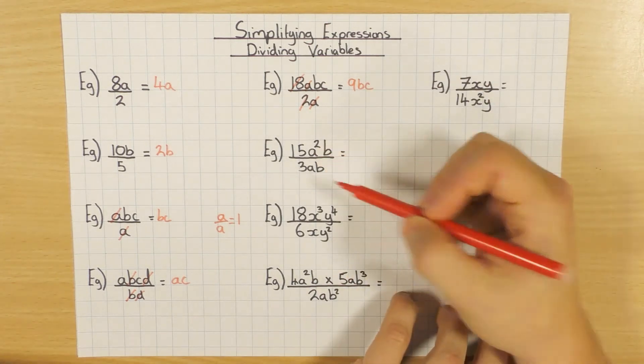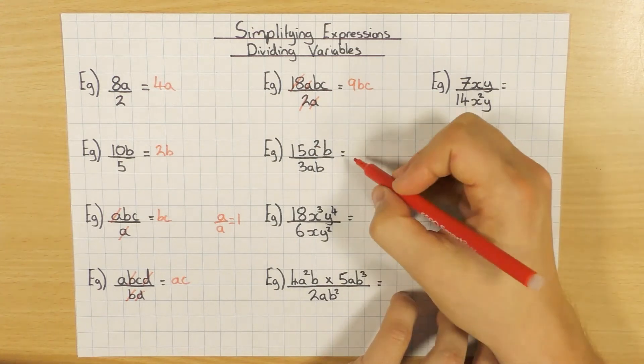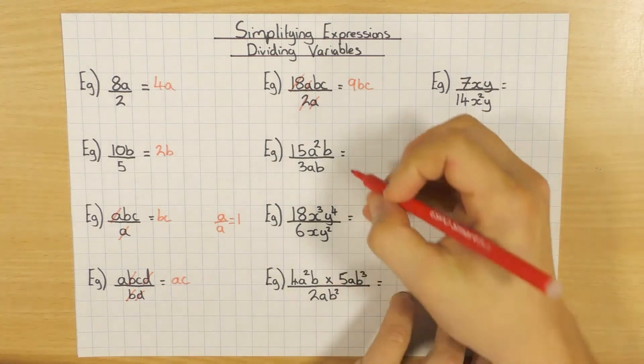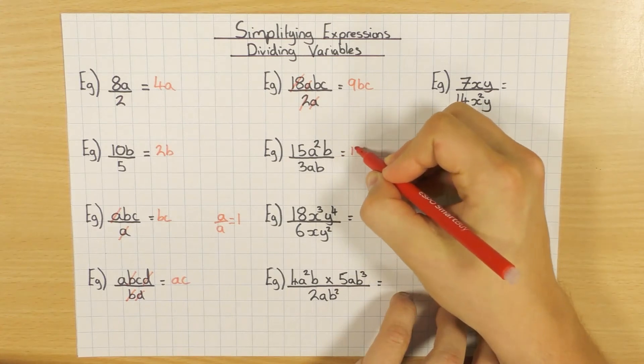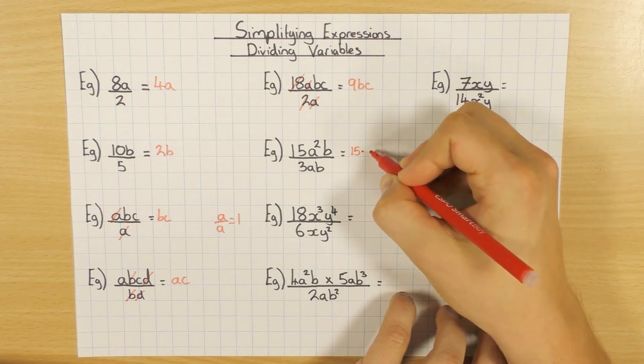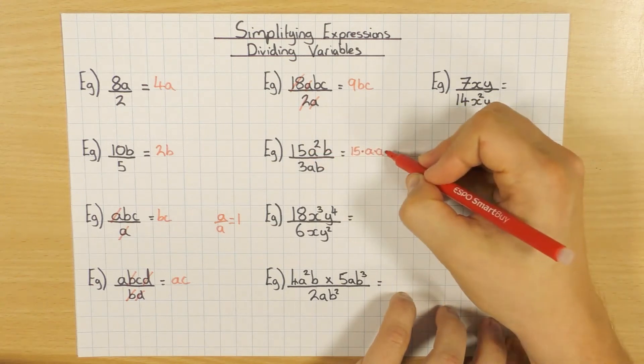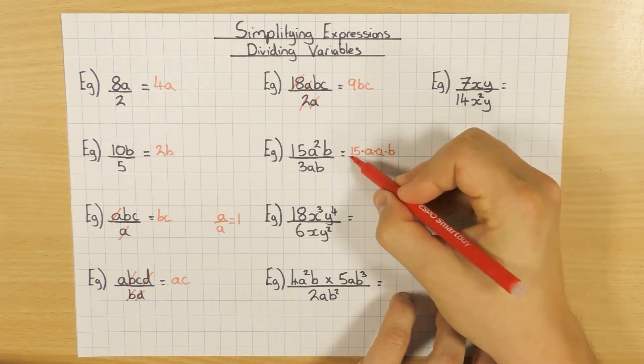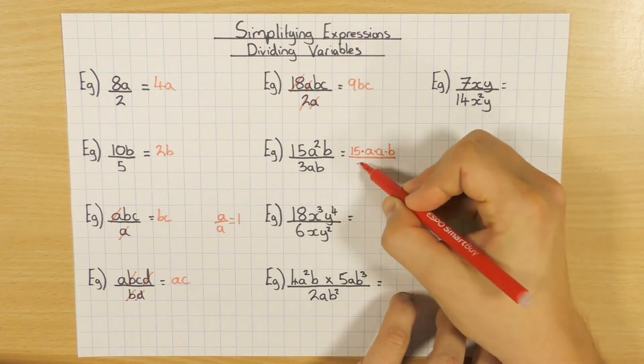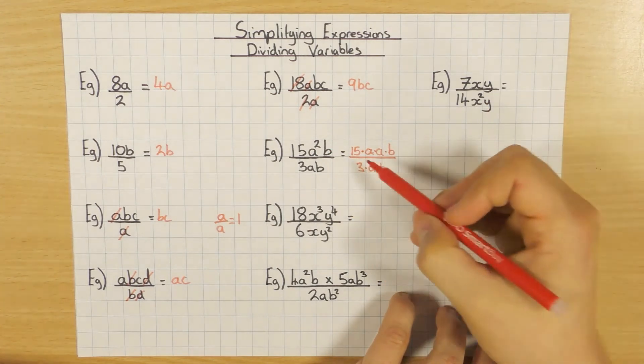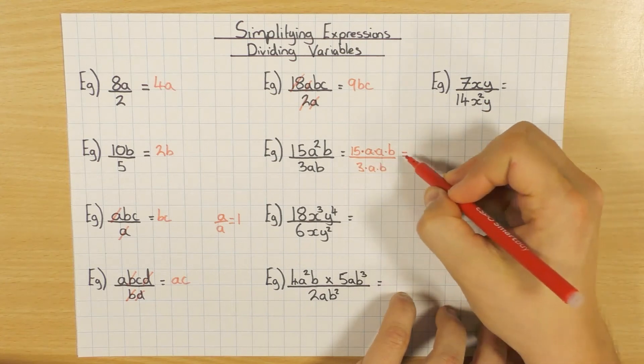Now, when you have powers, what I recommend to do is just to write it out. If you've seen the multiplying variables one, you'll know what I mean, but let's give it a go. So 15, and you might remember if you've seen that multiplying video, that a dot just means times. So 15 times a times a is my a squared, and I've also got to times it by b, all divided by 3 times a times b. So just write it out, and then it makes it a bit easier to see what's going on.